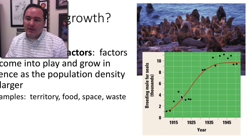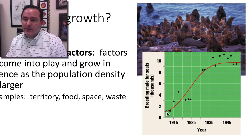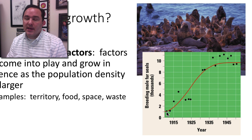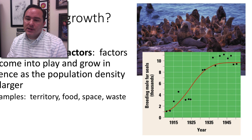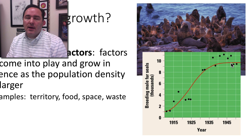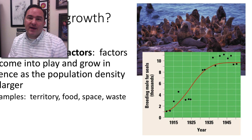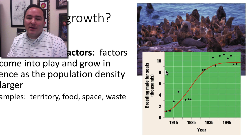So what you end up with is something like this: these seals that live on a little island where they breed were at first low in numbers because they had been hunted. But as laws were put into place where you couldn't hunt these seals, the population numbers began to grow and grow and grow. But then they started to taper off until they flatlined. The main density-dependent factor here is that there's just not enough room on this little island for lots of breeding male fur seals.